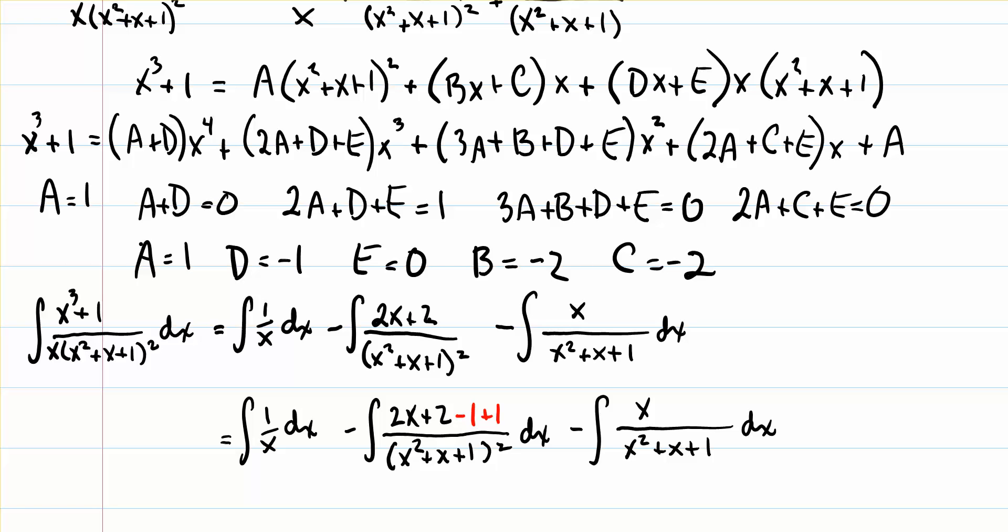To prepare the third integral, we'll do something similar. We also want to use x squared plus x plus 1 as u, so we need 2x plus 1 in the numerator. What we're going to do is start by multiplying numerator and denominator by 2, and then continue with the same trick in the next step.